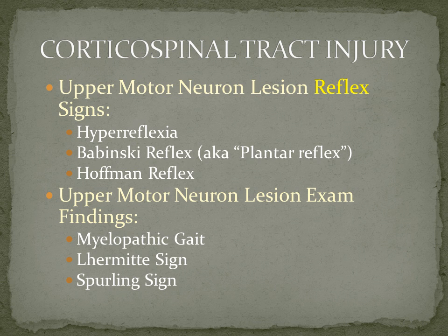On physical exam, we would expect to find any combination of the following findings: myelopathic gait, and we'll talk about what that consists of. We may or may not see a positive Lhermitte sign, and we may or may not see a positive Spurling sign. Let's talk more now about corticospinal tract injury and get into some of these physical examination maneuvers.